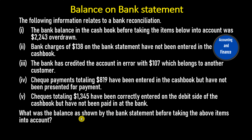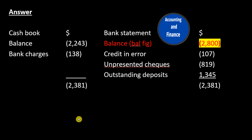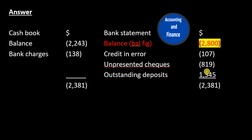What was the balance as shown by the bank statement before taking the above items into account? Cash Book balance: minus $2,243. Bank Statement balance figure: minus $2,800. Cash book bank charges: minus $138. Bank statement credit in error: minus $107. Bank statement unpresented checks: minus $819. Bank statement outstanding deposits: $1,345. Total: minus $2,381 (cash book); minus $1,717 (bank statement).